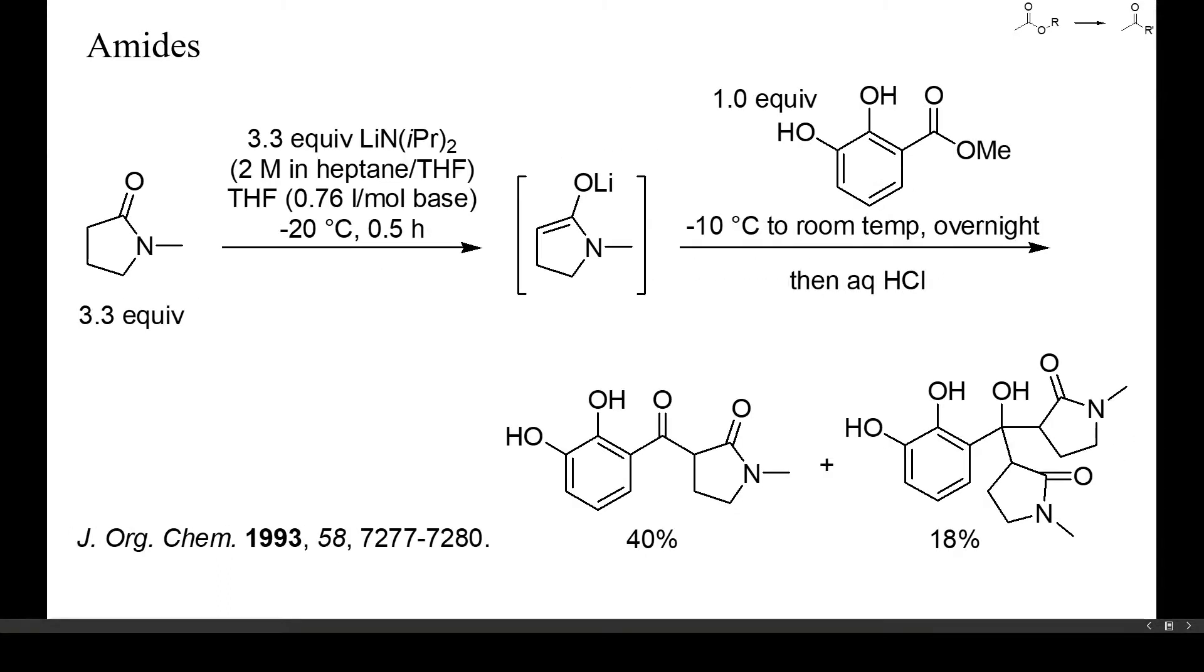Here, NMP was lithiated stoichiometrically with LDA and then condensed with a methyl dihydroxybenzoate. A large excess of enolate was required to deprotonate the acidic hydroxyl groups. In addition to a low yield of ketone, substantial amounts of a tertiary alcohol were obtained.